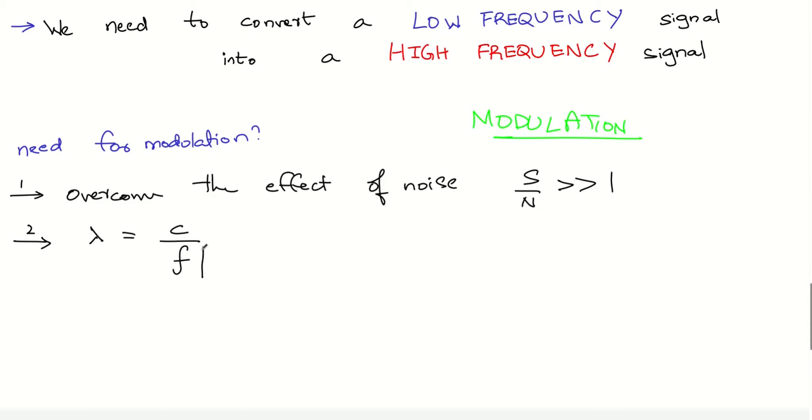So, if we actually give a high frequency message signal, lambda, that is the height of the antenna, will decrease. This is also a need. And the third point is to convert a wide band signal to a narrow band signal.